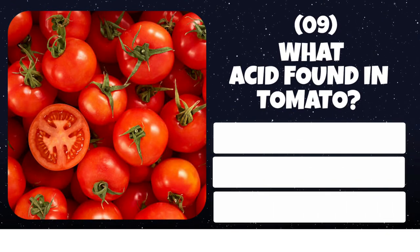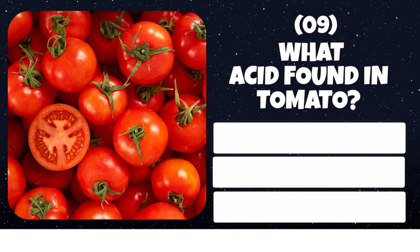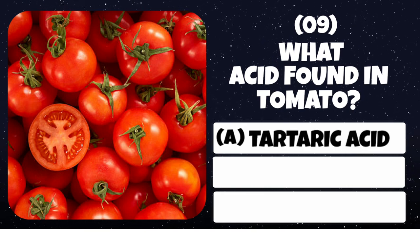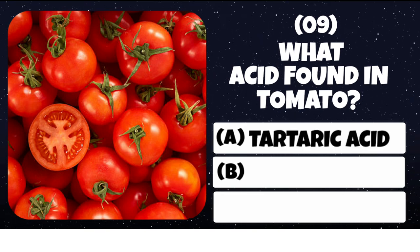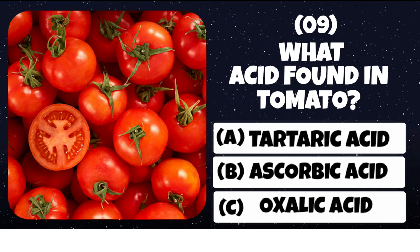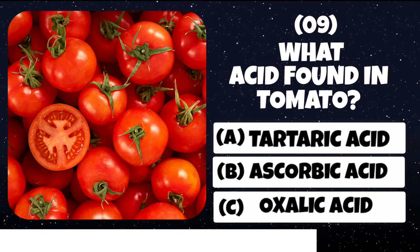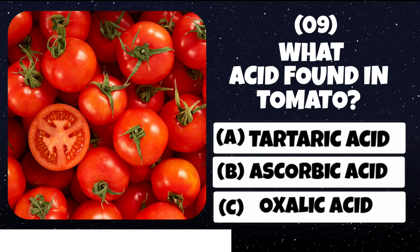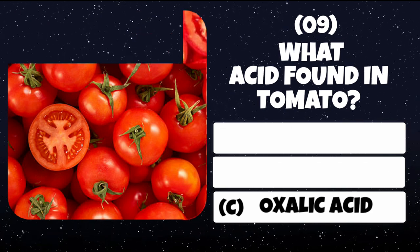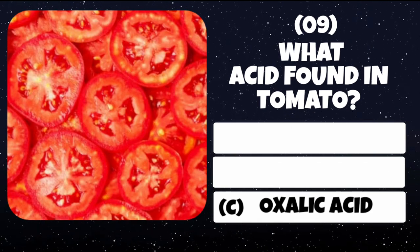Question number 9. What acid is found in tomato? Option A: Tartaric acid. Option B: Ascorbic acid. Option C: Oxalic acid. Correct answer is Oxalic acid.